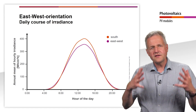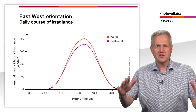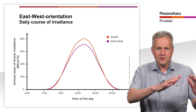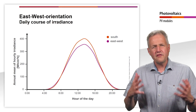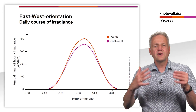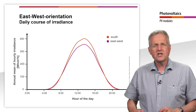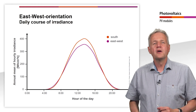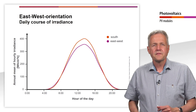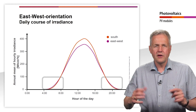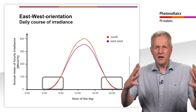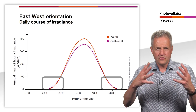Another advantage of east-west systems often mentioned is that the electricity production is better distributed over the day, since the east-facing modules produce more electricity in the morning and the west-facing modules in the evening than the south-facing module. In fact, however, this effect is very small because of the low module tilt angle. Here you can see the irradiation per hour averaged over a year. The orange line corresponds to the irradiation on a south-facing PV system, and the purple line to the irradiation on an east-west-facing system, both with an inclination of 10 degrees. The irradiation in the evening and morning hours is only minimally increased with the east-west orientation. The actual reason to plan a plant in east-west orientation is therefore mainly the better utilization of space.